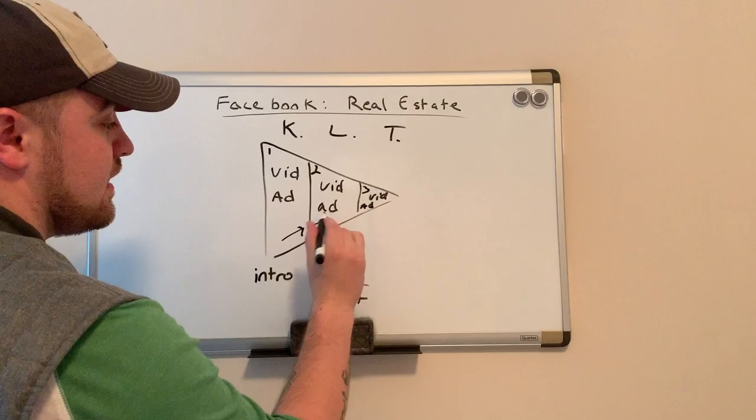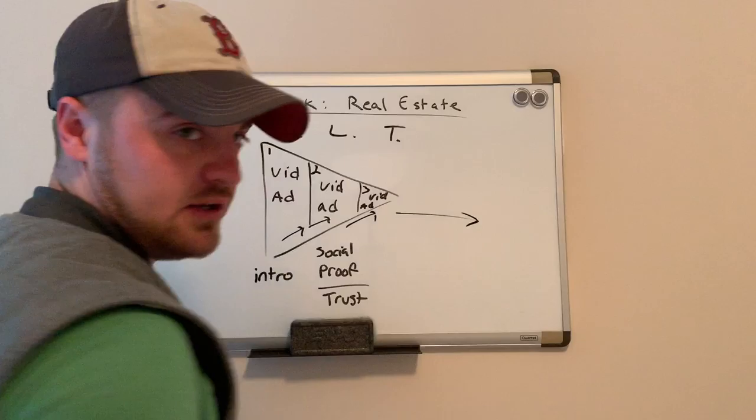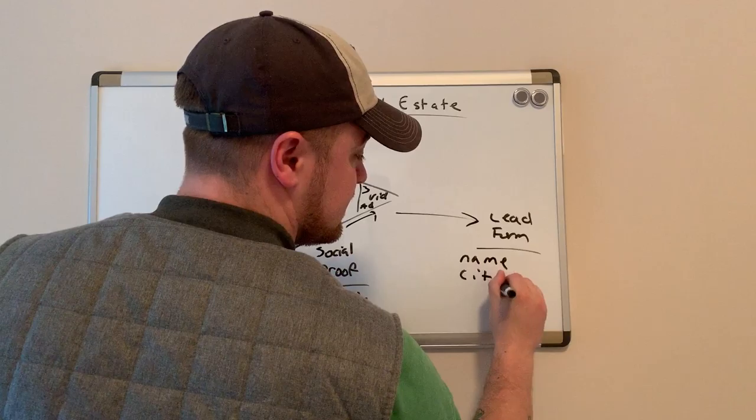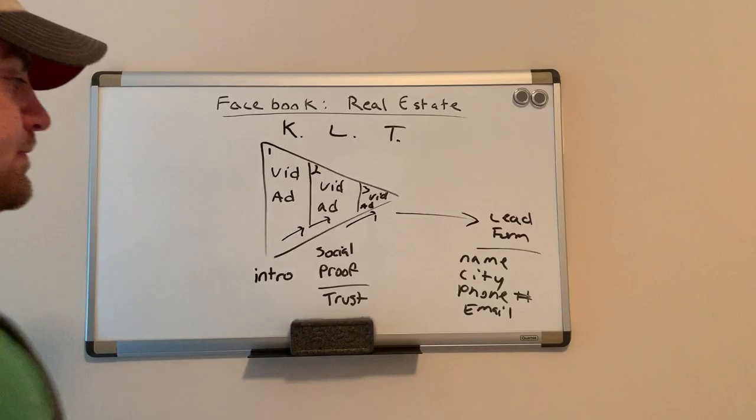And if they watch both of these ads, there's a chance that they are very interested in what you have to say. They're not just watching it for fun. So the last one, you convert them to what's called the call to action ad. And what you do is you have a lead form where they fill out their name, city, phone number, and email. And you take this and you contact them.